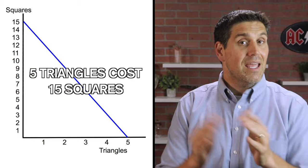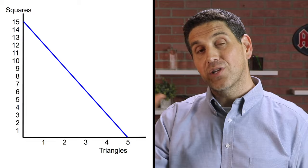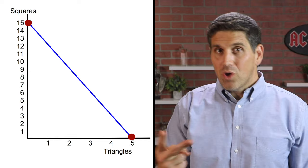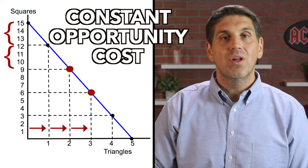Opportunity cost is the specific number of squares that you give up when you produce a certain number of triangles. In my case, I gained five triangles, but it cost me 15 squares. So each one triangle cost me three squares. Now, if I put all my time into producing squares, then I have to give up the five triangles, so each one square cost me one third of a triangle. That's my opportunity cost. My example is easier because there are only two combinations and I'm assuming the opportunity cost is constant — meaning every single time I produce a triangle, I give up another three squares.